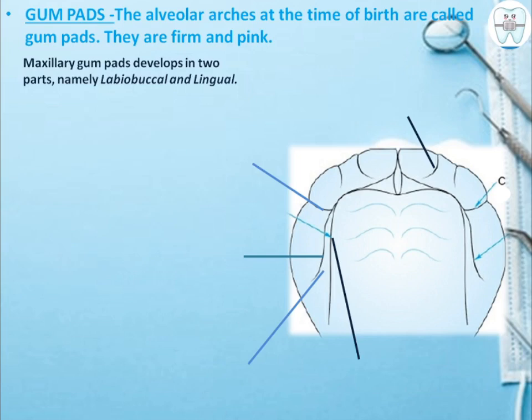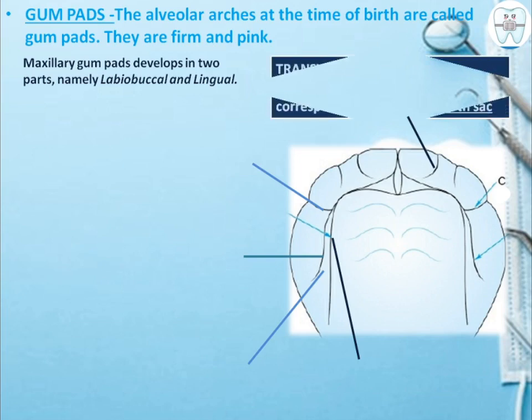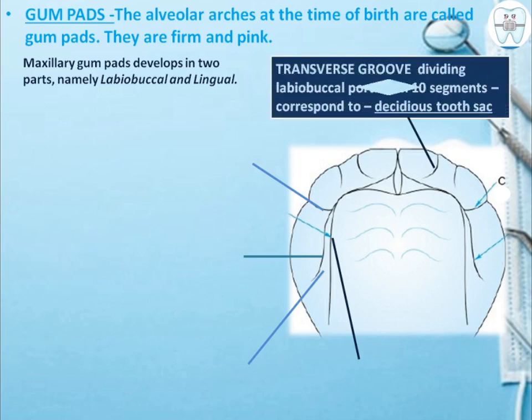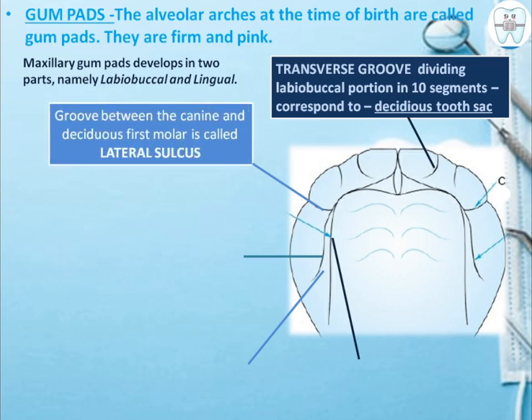The maxillary gum pad develops into two parts: labio-buccal and lingual. Transverse grooves divide the labio-buccal portion into 10 segments, which correspond to the deciduous tooth sac. The lateral sulcus is the groove between the canine and the deciduous first molar.